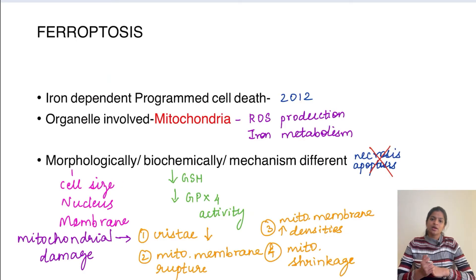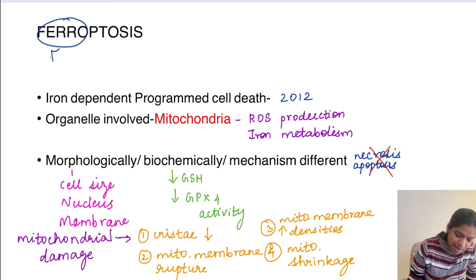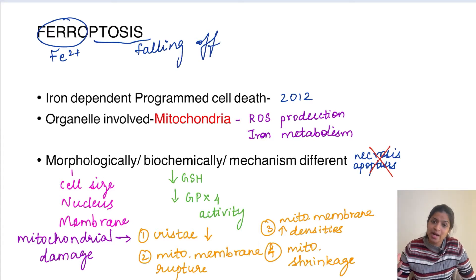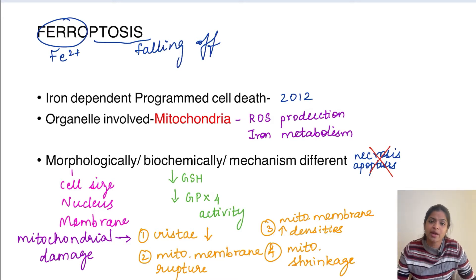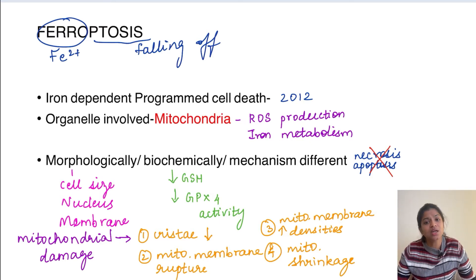Ferroptosis is an important form of cell death. 'Ferro' means iron, and 'ptosis' means falling off. It is a form of cell death in which free radicals are implicated, produced by iron in the Fenton's reaction. So iron is responsible for this kind of cell death. It can also be called an iron-dependent programmed cell death, because it follows certain set signaling pathways.